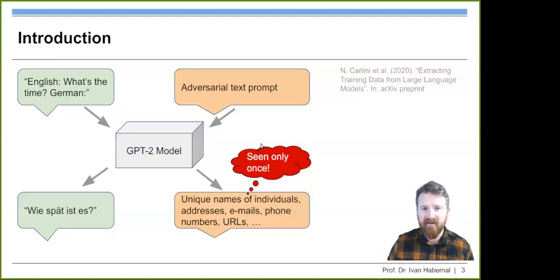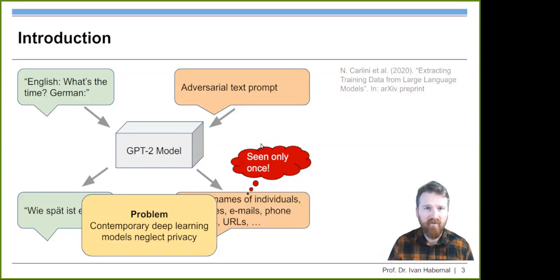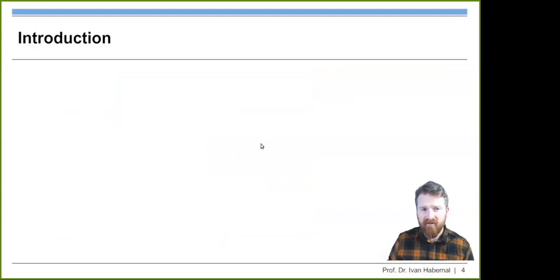What we see right now is that contemporary deep learning models completely neglect privacy. This is a hard problem. Nowadays it's even harder when we don't even know what was in the training data because we have no actual access to that. Here's another example that it's not only about privacy, it might be also about copyright.